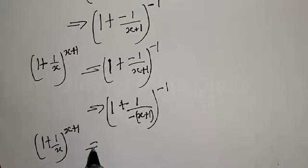This implies that x plus 1 is equal to minus 4. Therefore x is equal to minus 4 minus 1, which gives us x equals minus 5. So the value of x is minus 5.